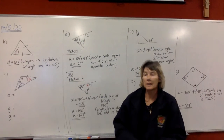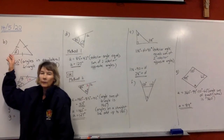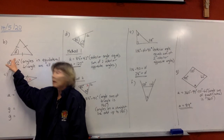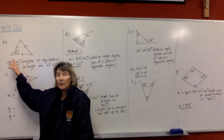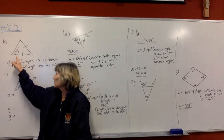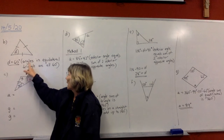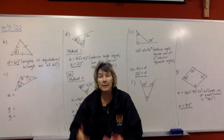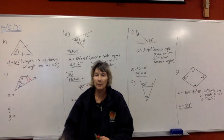We'll continue with some examples. In this next question we're trying to find the letter D and what value that is, and we're also going to give a reason. The quickest way on this one, when you spot that it's an equilateral triangle, is just to say D equals 60 degrees — angles in an equilateral triangle are all 60 degrees. That's the quickest way, otherwise we're going to have to do a couple of steps with two reasons.